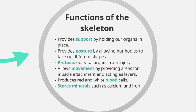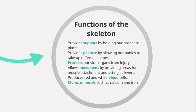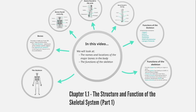Bones also produce red and white blood cells. Red blood cells carry oxygen around the body, while white blood cells help fight disease. The final function is that the skeleton stores minerals such as calcium and iron that are used by the body. So we have looked at the names and locations of the bones, and the functions of the skeleton. You now need to fill in your task sheet, answering every question to the best of your ability. If you need to watch the video again to learn the names and locations, feel free to do so.